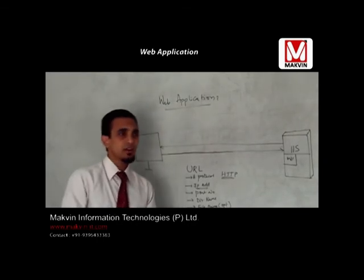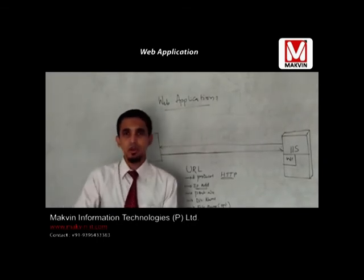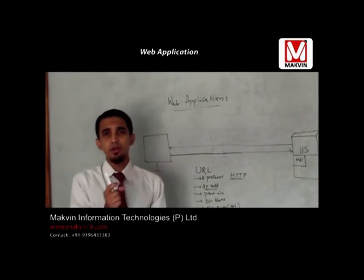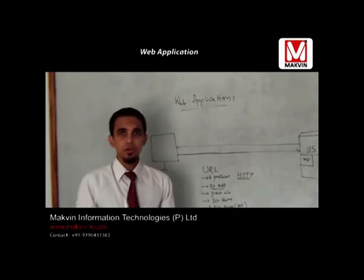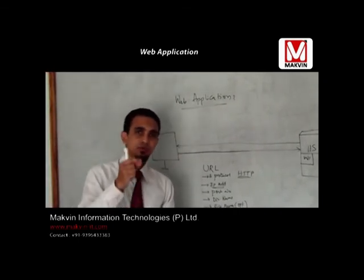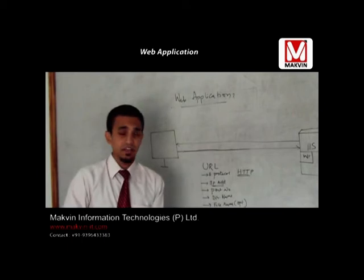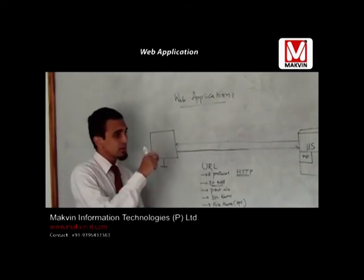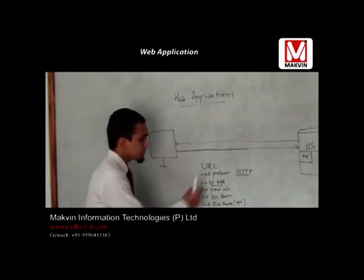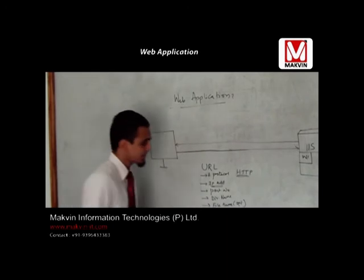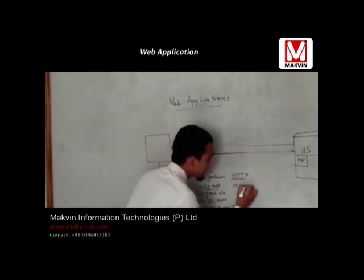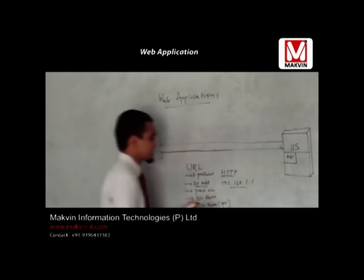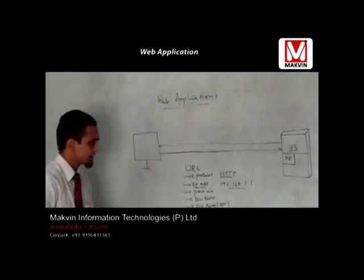For example, whenever a candidate joins an organization, they get an employee ID, and that employee ID is unique — it identifies the candidate uniquely. In the same way, to identify a system uniquely in a network, I use an IP address, like 192.168.1.1. That is the format of an IP address.